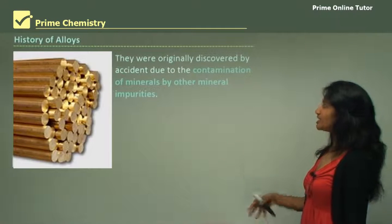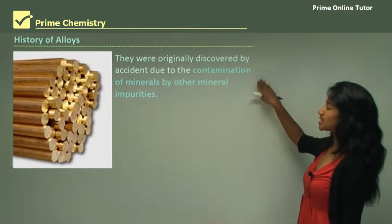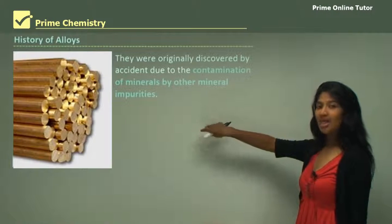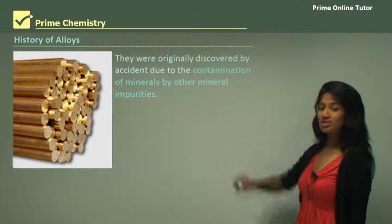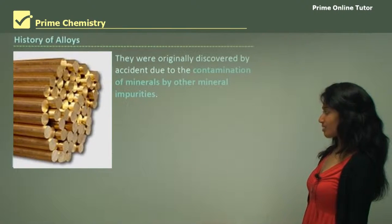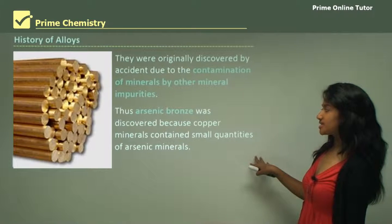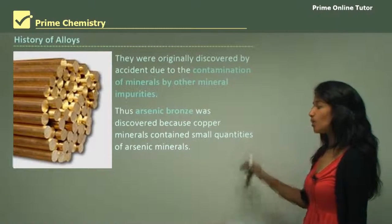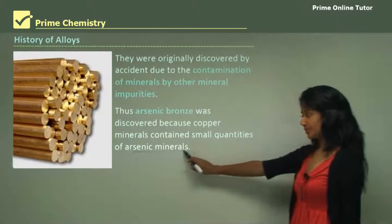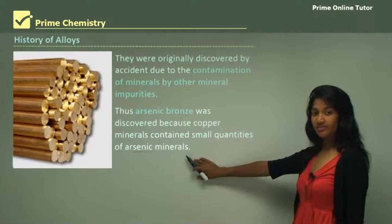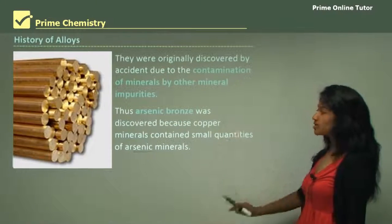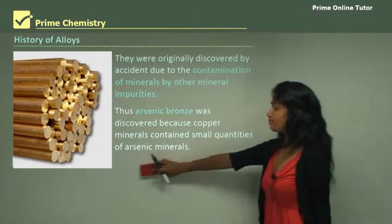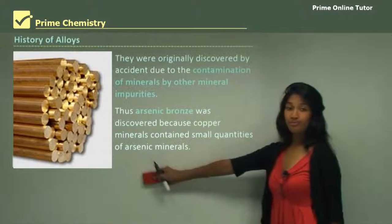Alloys were first discovered by accident. It was a contamination of minerals by other mineral impurities that caused the discovery of alloys. Thus arsenic bronze was discovered because copper minerals contain small quantities of arsenic minerals. Because of the presence of arsenic minerals, when you smelted the copper, you got arsenic bronze instead of pure copper.